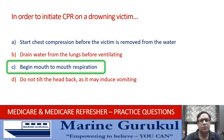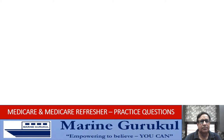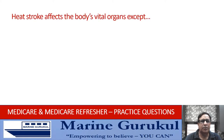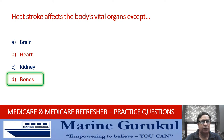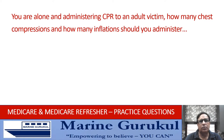Heat stroke affects the body's vital organs except: brain; heart; kidney; or bone. In case of a heat stroke, brain, heart, and kidney are all affected. So the answer is D — the bones are not affected by heat stroke.